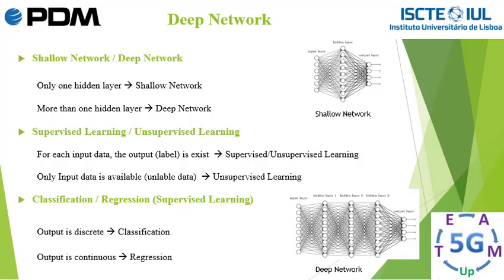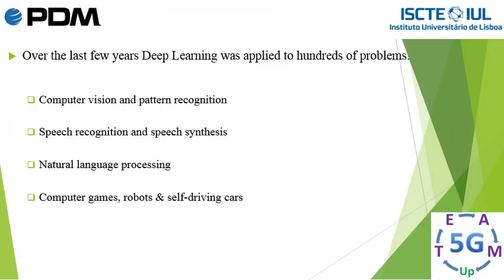Deep learning is a subset of machine learning — a newer and more complex way of learning. About unsupervised learning, the goal is to find a mapping that describes a hidden structure from unlabeled data samples. It is a powerful tool for identifying structures when unlabeled data is given. Over the last few years, deep learning was applied to hundreds of problems: computer vision, pattern recognition, speech recognition, speech synthesis, natural language processing, computer games, robots, self-driving cars, and many others.